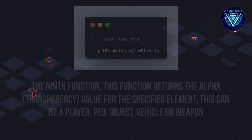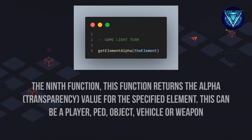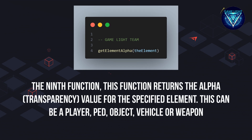The ninth function. This function returns the alpha (transparency) value for the specified element. This can be a player, PED, object, vehicle, or weapon.